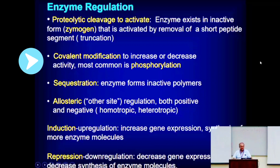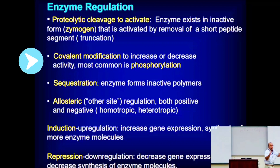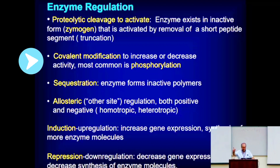You're taking an enzyme and modifying the R-groups of the amino acids in that enzyme. The R-groups that can have phosphate added to them include hydroxyl-containing ones: serine can become phosphoserine, threonine can become phosphothreonine, or tyrosine.